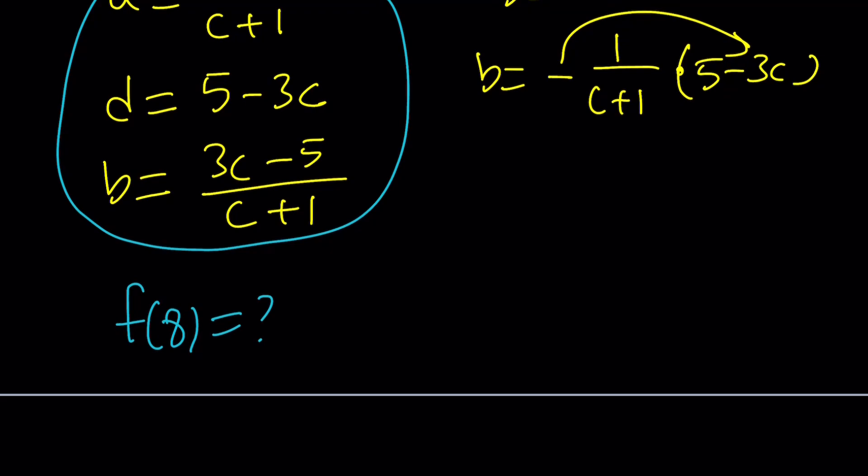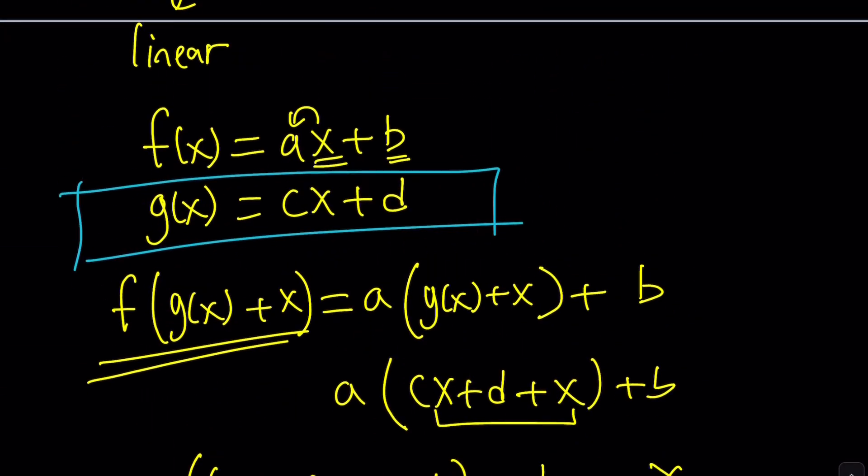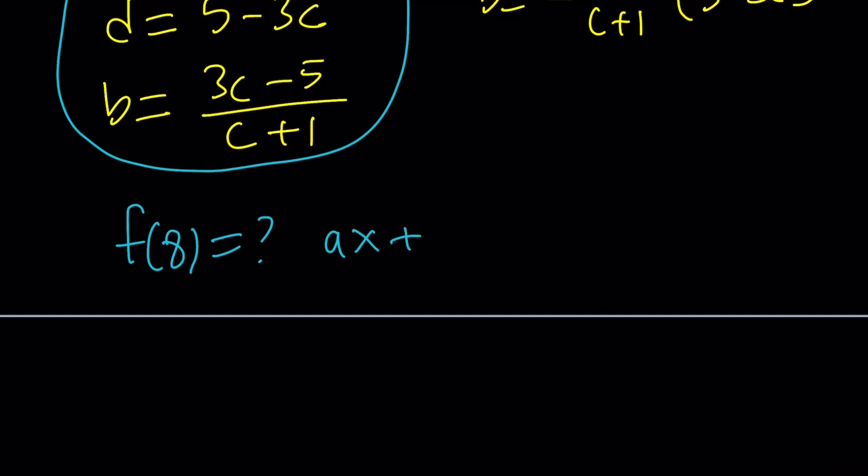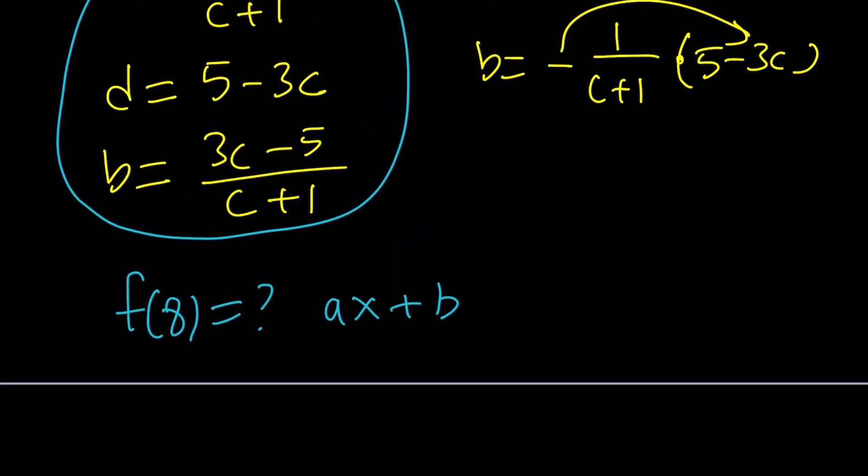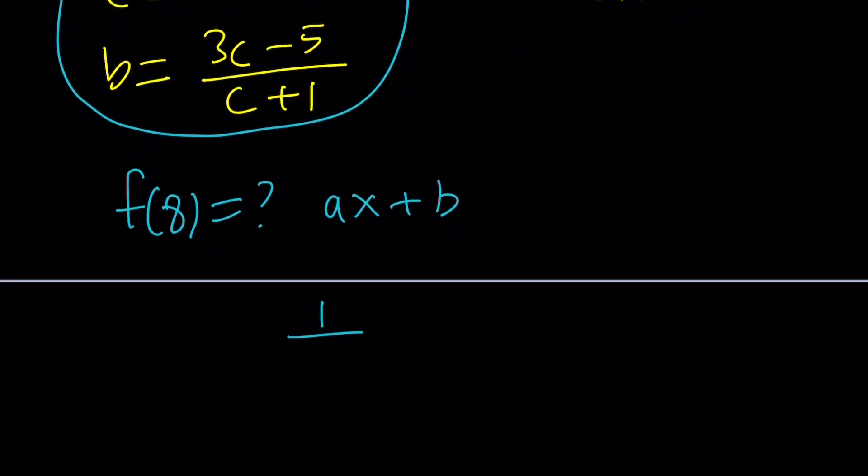But what is f(x) written as? It was written as ax + b. So ax + b. And then let's replace a with what it is. a can be written as 1/(c + 1), so times x. This is going to be f(x), by the way. Plus b, which is (3c - 5)/(c + 1). Awesome. So we were able to find f(x), actually, as a linear function in the form mx + b.